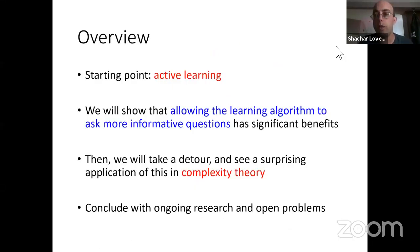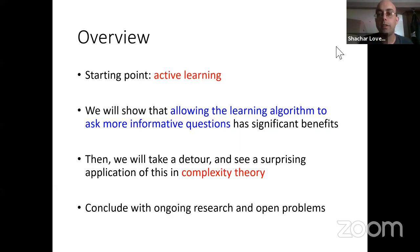The starting point of this talk is active learning. By allowing an active learning algorithm to ask more informative questions in various scenarios, we can achieve very significant benefits. That's going to be the first half of the talk. Then I'll take a detour and show a surprising connection to a question in complexity theory, and spend some time on ongoing research and open problems.